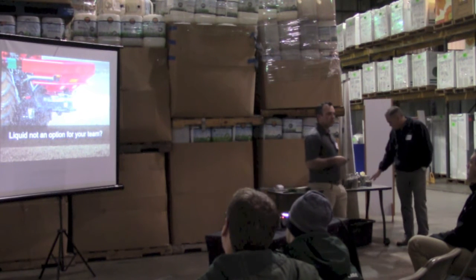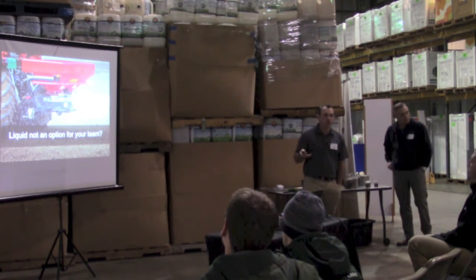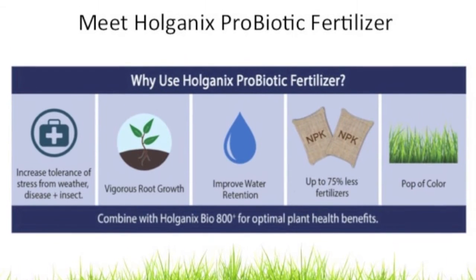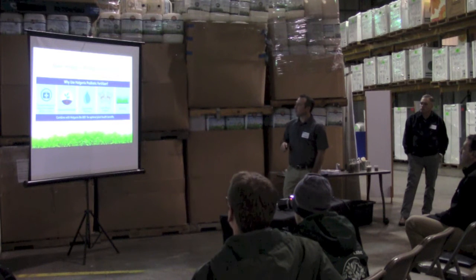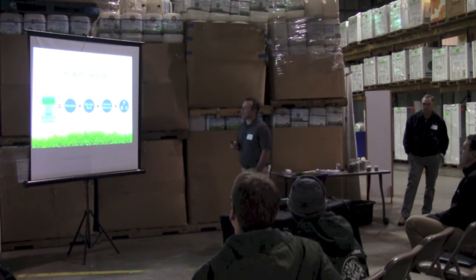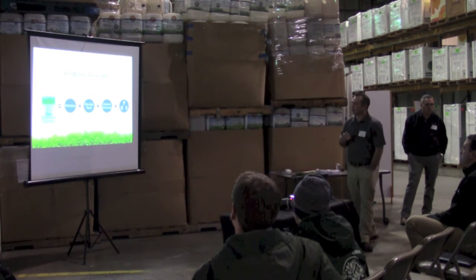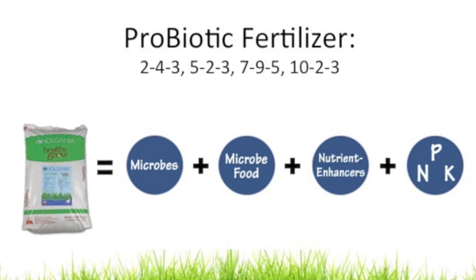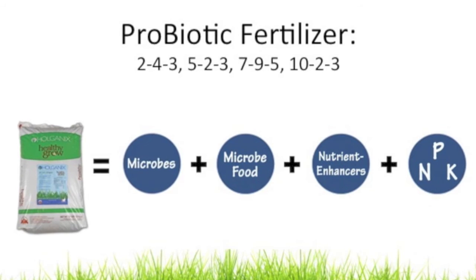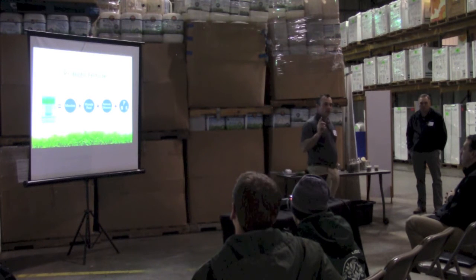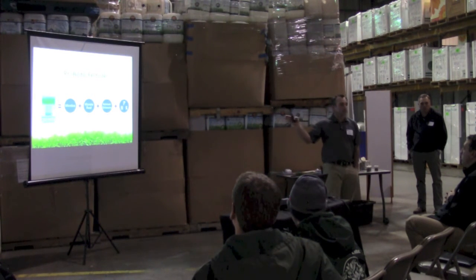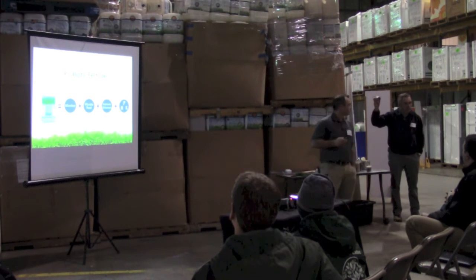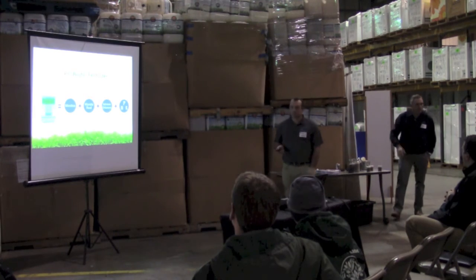We've been talking about liquid the whole time, but that's not an option for everybody depending on your equipment. We have granular probiotic fertilizers — a 24-3, 5-2-3, 7-9-5, and 10-2-3 — using Healthy Grow in combination with Holganix. You can get a bag right now and apply it to your lawn to get the benefit of a fertilizer and a seven-ounce rate of Holganix. The only difference is you can't do your pesticide input reductions, but you still get an NPK reduction.